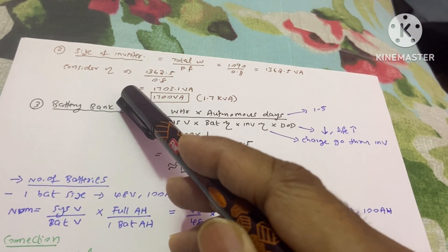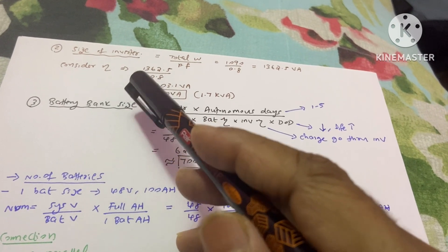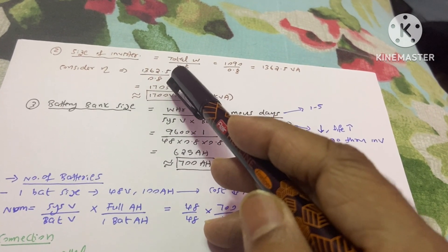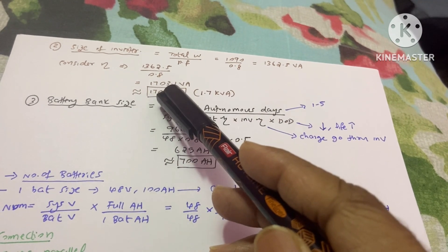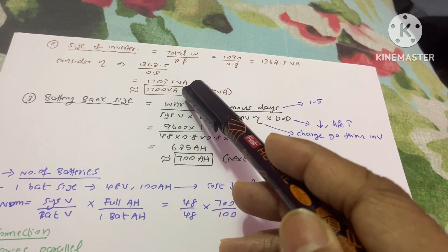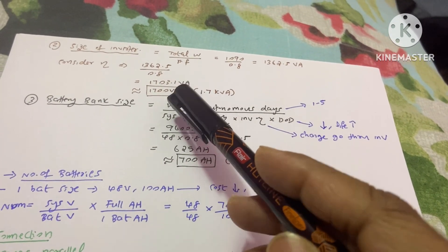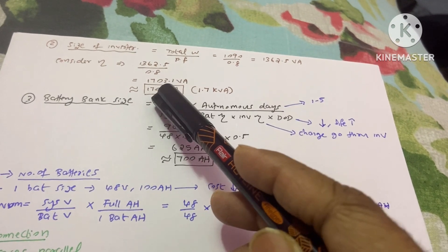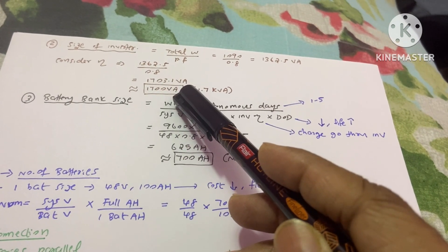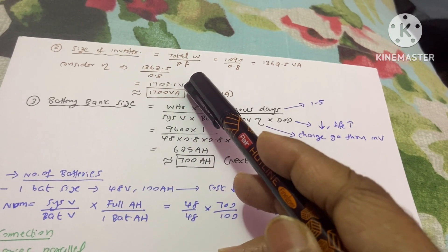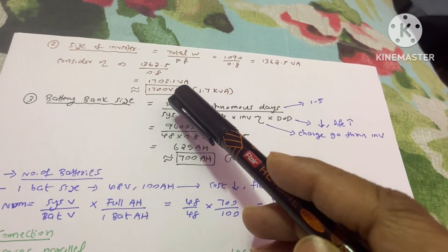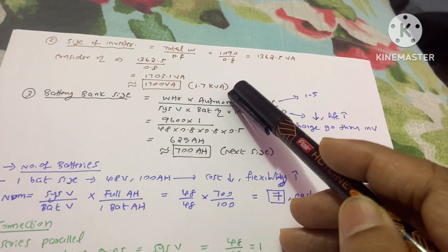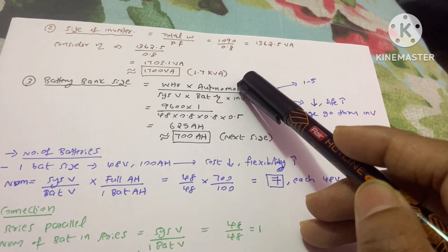We also need to consider inverter efficiency — all machines have losses, so the inverter has 80% efficiency. That gives us 1703.1 VA, almost 1700 VA. Taking 1700 VA — slightly less than the calculated value — is acceptable. So we need a 1.7 kVA inverter for our whole system.